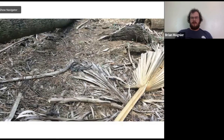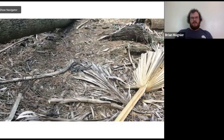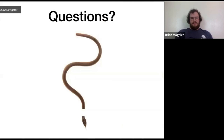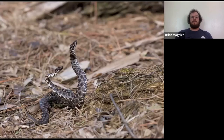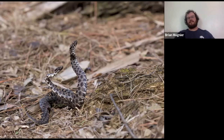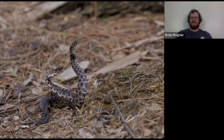Cottonmouths and diamondbacks will also engage in this sort of behavior — so imagine instead of just the little pygmy rattlesnakes, you have multi-foot-long snakes tossing each other around in the grass. It would be pretty cool to watch.